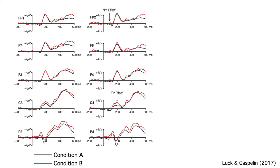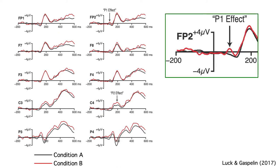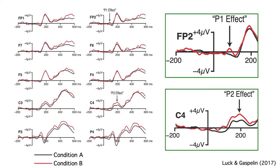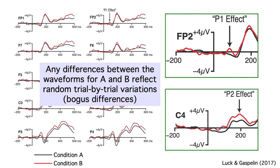When I looked at these waveforms, I saw two differences between conditions A and B that looked pretty big. One was a so-called P1 effect — a more positive voltage for condition B than for condition A across all the right hemisphere electrode sites. The other was a so-called P2 effect — a more positive voltage for condition B at the central and parietal sites in both hemispheres. But remember, these so-called effects just reflect random variation, since conditions A and B were created by randomly assigning each EEG epoch to one condition or the other.